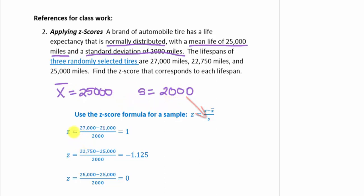We substitute the first mileage, 27,000, for our x-value: z equals 27,000 minus 25,000 divided by 2,000. That gives us 2,000 divided by 2,000, or a z-score of 1. This represents within one standard deviation of the mean. More specifically, since it is positive one, that means 27,000 fits within one standard deviation above the mean.